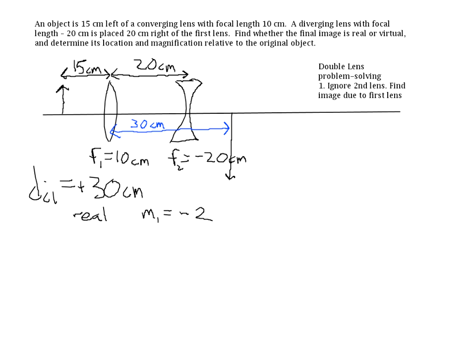Now we move to step two. We use the image location from the first lens as the object for the second lens, and solve for the image due to the second lens while ignoring the first lens.